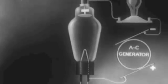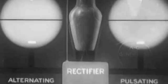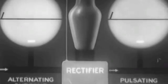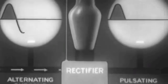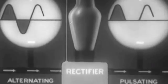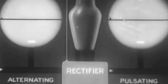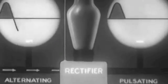We can visualize the result of the tube's rectifying action with the aid of these two oscilloscopes. The one on the left shows alternating current coming in, the one on the right shows pulsating direct current going out. The applications of this basic rectifying principle are many and important. Here's one of them: changing AC to DC on the nation's electrified transportation systems.